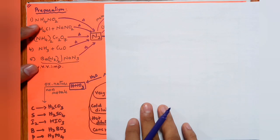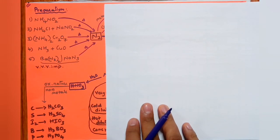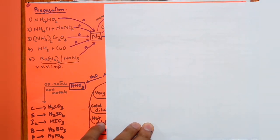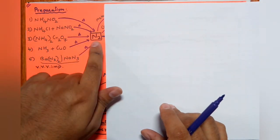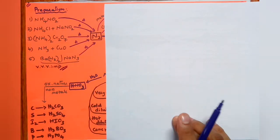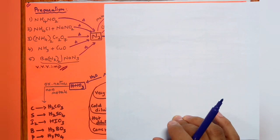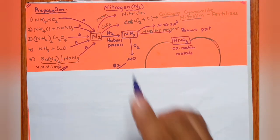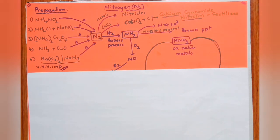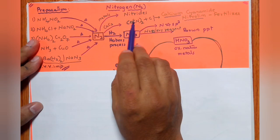For the preparation of nitrogen gas: NH4NO2 on heating gives N2; NH4Cl plus NaNO2 on heating also gives N2; ammonium dichromate on heating gives N2; NH3 with CuO gives N2. Very importantly, barium azide Ba(N3)2 or sodium azide NaN3 on thermal decomposition gives nitrogen gas.